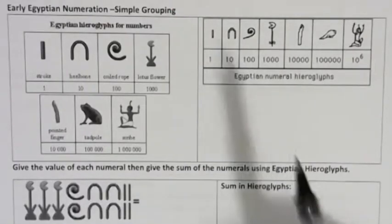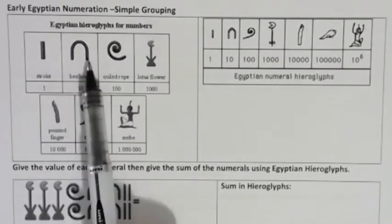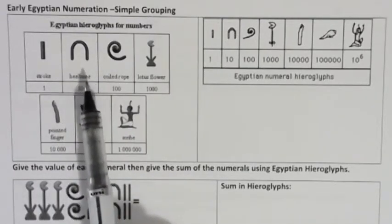And in our Hindu-Arabic system, we have place values. So a five can have a different value depending on where it is. But in the Egyptian system, the symbols have the same value no matter where they are.